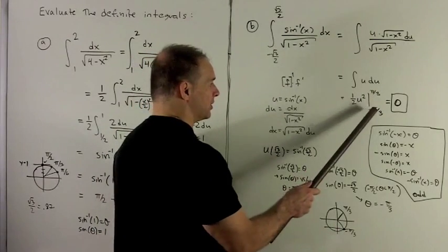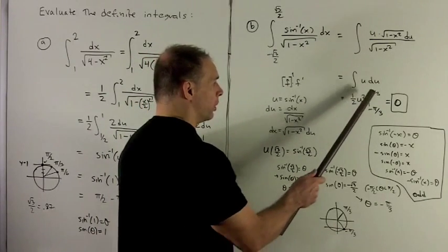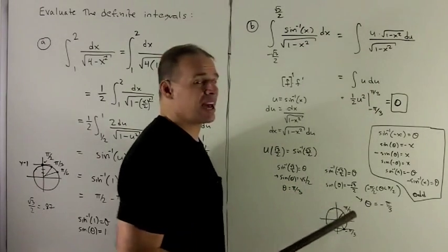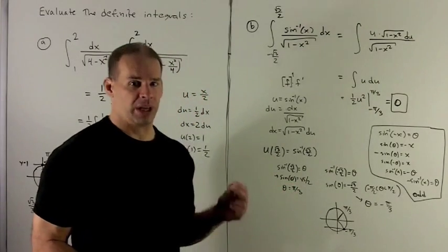Now, when we put these into our antiderivative, we notice the value is the same because the square will cancel the minus sign. So when we take the difference, we get 0.